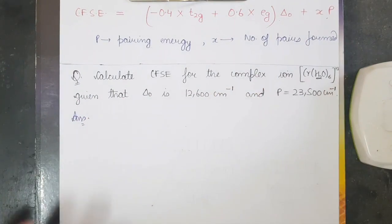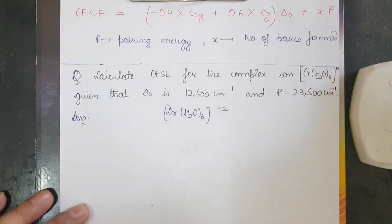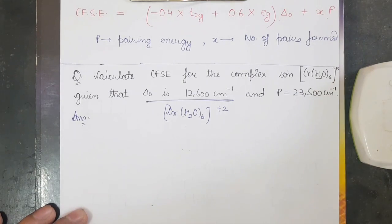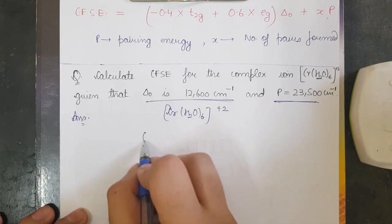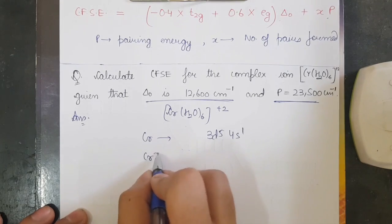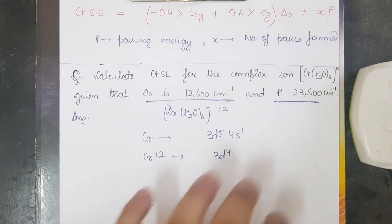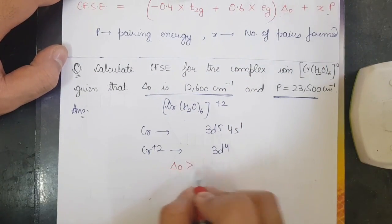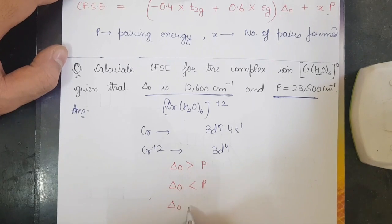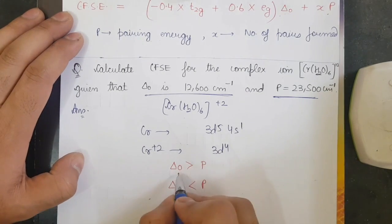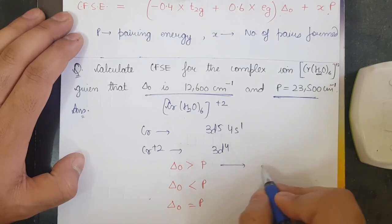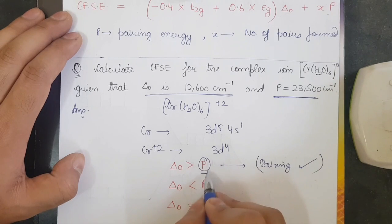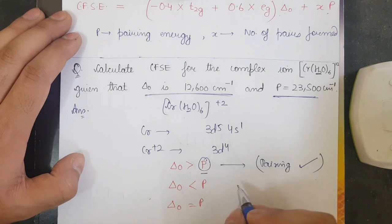Let's calculate the CFSE for the complex ion [Cr(H₂O)₆]²⁺, given Δ₀ = 12,600 cm⁻¹ and P = 23,500 cm⁻¹. First, Cr has configuration 3d⁵4s¹, so Cr²⁺ is 3d⁴. Now comparing Δ₀ and P: since P > Δ₀ here, it means pairing energy is larger, so pairing would NOT occur — this is a weak field case.